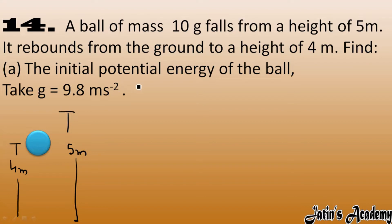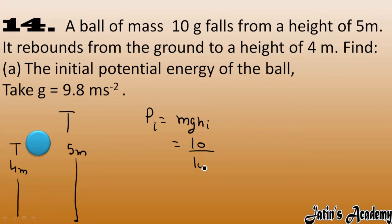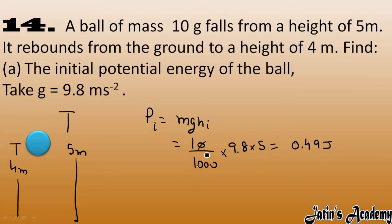To calculate the initial potential energy, we use PE = mgh. Mass is 10 grams converted to kilograms: 10/1000. g is 9.8 and initial height is 5 meters. Multiplying these gives 0.49 joule as the initial potential energy.